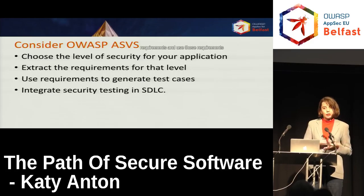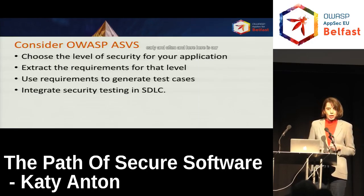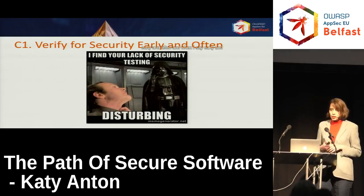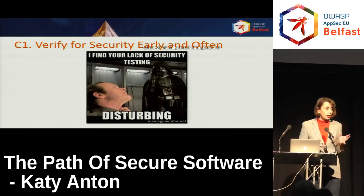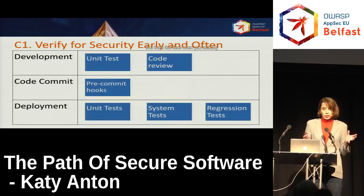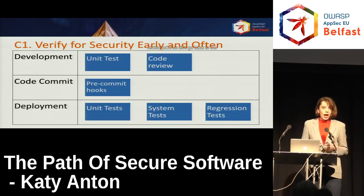We can use ASVS to choose the appropriate level of security for our application, extract the requirements, and use those requirements to generate test cases that help us verify for security early and often. And here is our first control: verify for security early and often — throughout the software development cycle. You can start from the time you write the code, and apart from unit tests, you can also have further checks at the code review point.